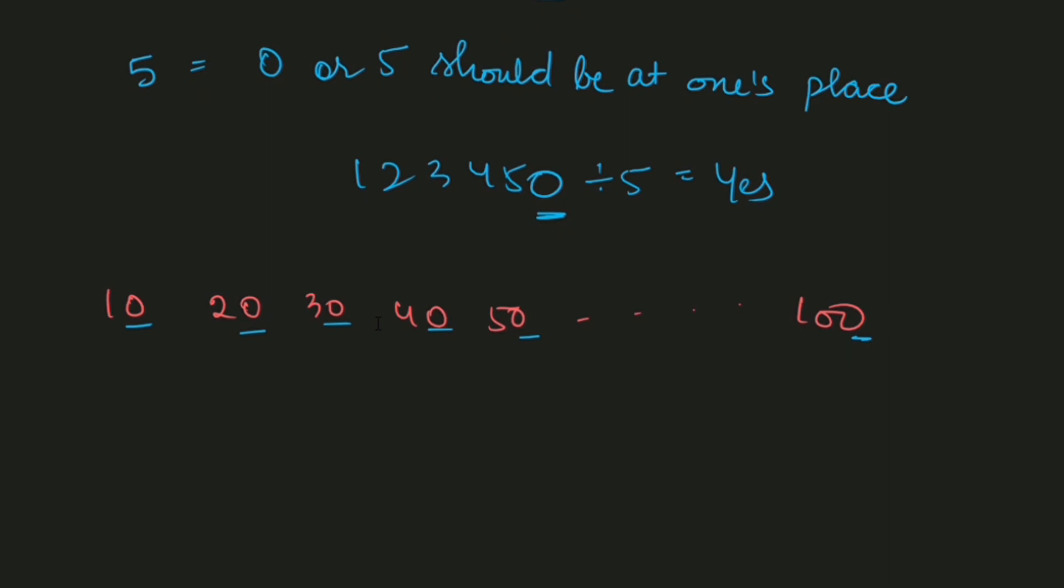What is the divisibility test for 10? 0 should be at one's place. If any number has 0 at the one's place, then you can divide the number by 10. You only have to look at the one's place. You have to check the digit at the one's place. That way you can get to know if a number can be divided by 5 or 10 or not.